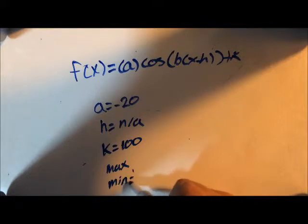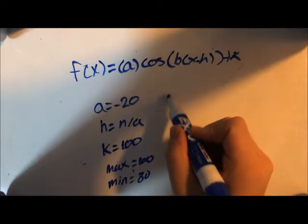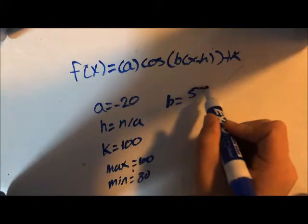There is no h value in this function, meaning the graph does not undergo a phase shift to the left or right. The reason for this is because the time starts at zero, meaning the graph starts at zero, therefore there is no phase shift.